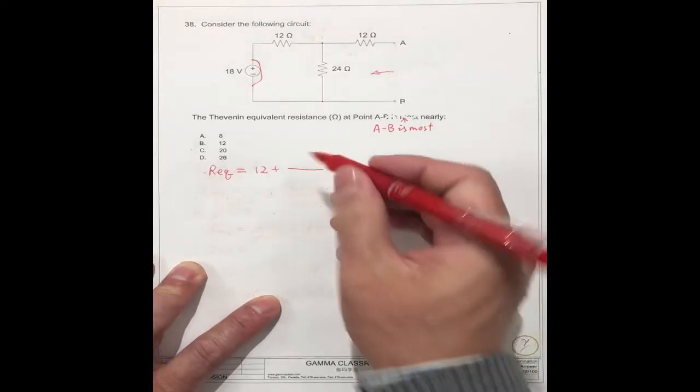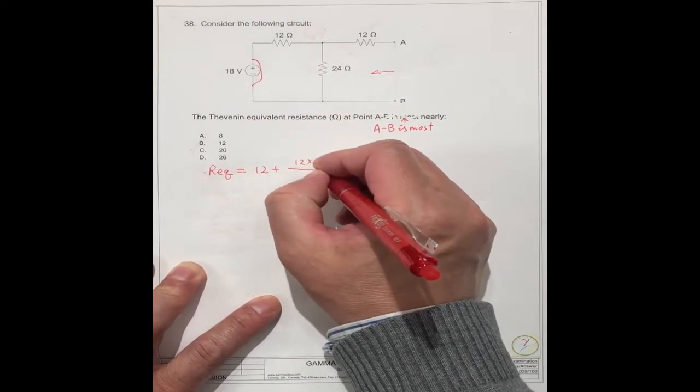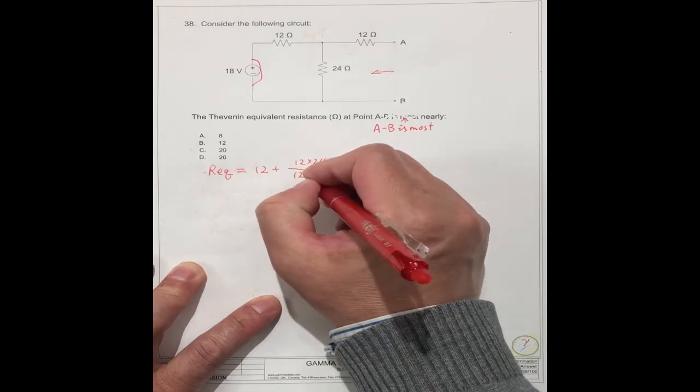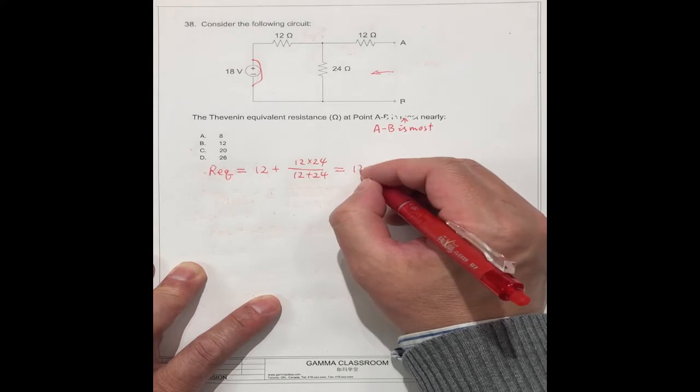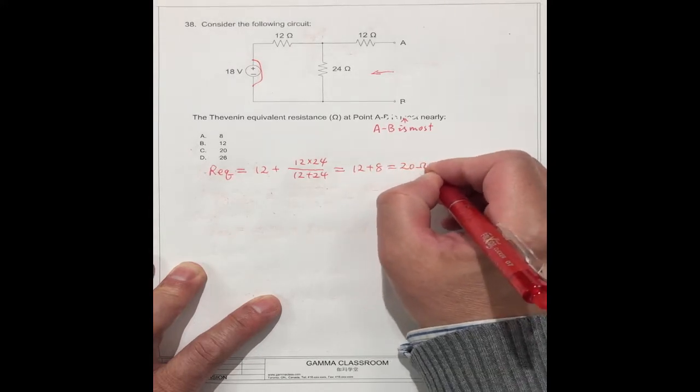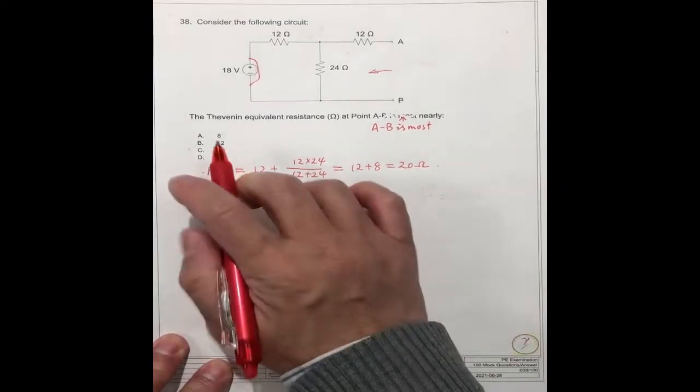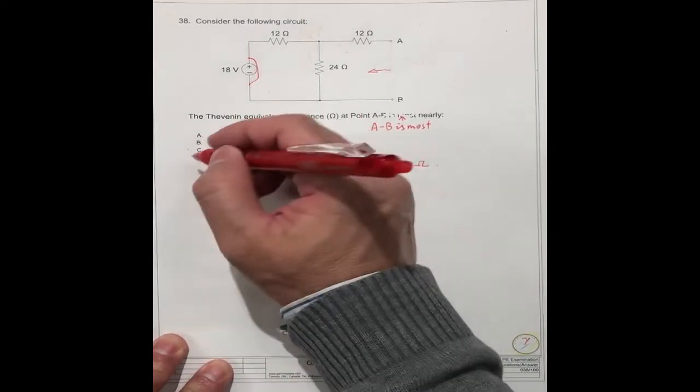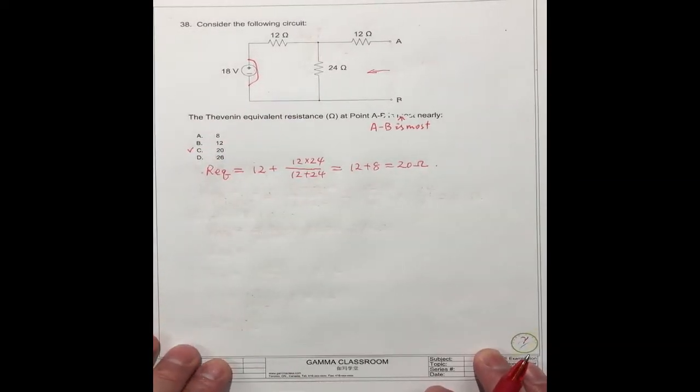These two resistors is 12 times 24, 12 plus 24 equals 12 plus 8 equals 20 ohms. It's very easy. We get the equivalent resistor. The answer should be C.